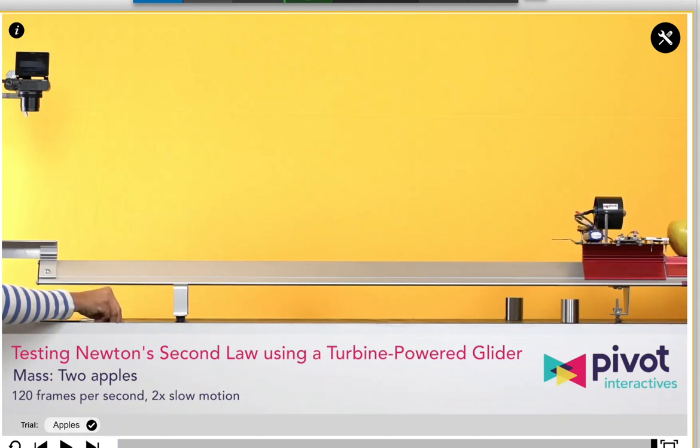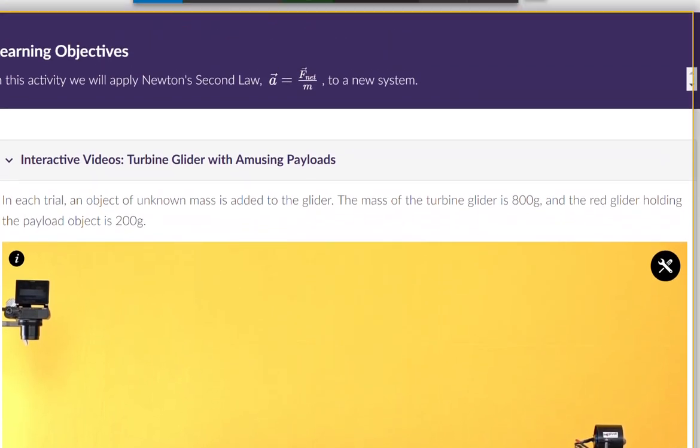So we are going to start moving to Newton's second law. Newton's second law is that the acceleration of a system looks like the net force on the system divided by the mass of the system.